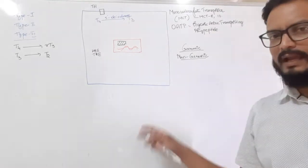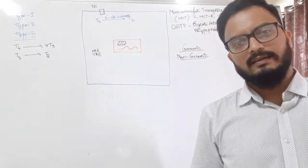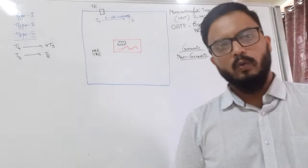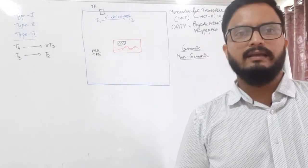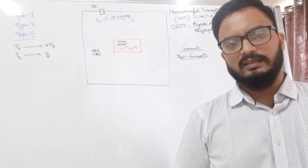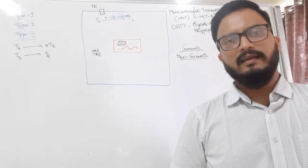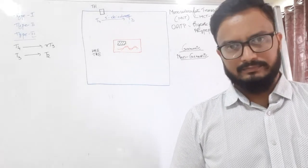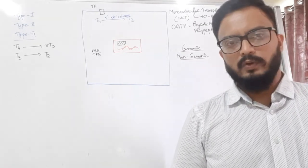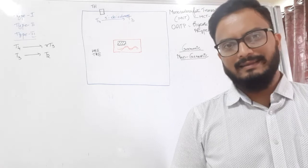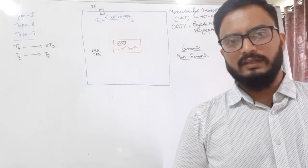Coming to the mechanism of action of the thyroid hormones — we discussed in the previous video how the thyroid hormones are produced, and on stimulation by the thyroid stimulating hormone which acts on the thyroid gland, T3 and T4 are secreted into the blood. T4 is produced in a higher quantity than T3; however, T3 is the most active form of the thyroid hormone.